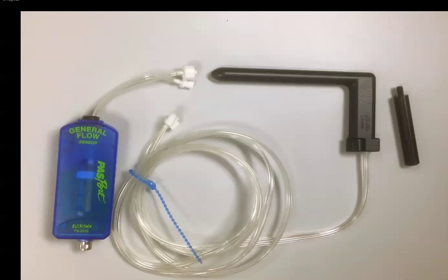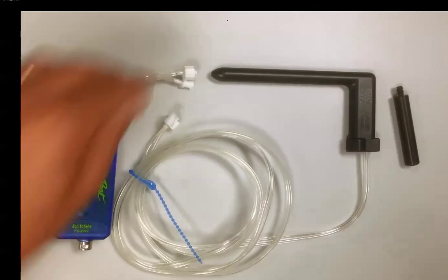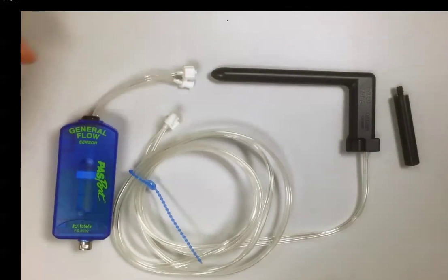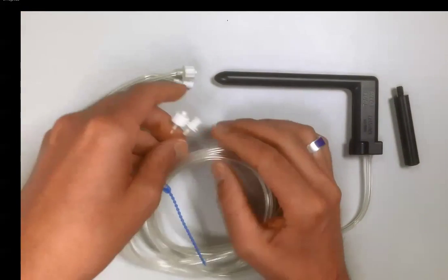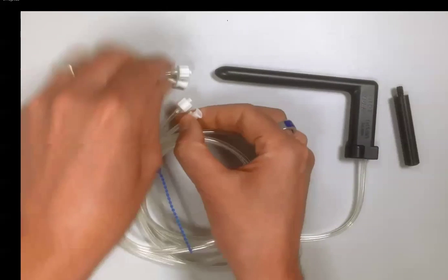For using the device we are going to connect the pressure connectors on the top of the general flow sensor to those that are on the tubing from the pitot tube. We will go ahead and match those two together, the two different types, and give them a quick twist.